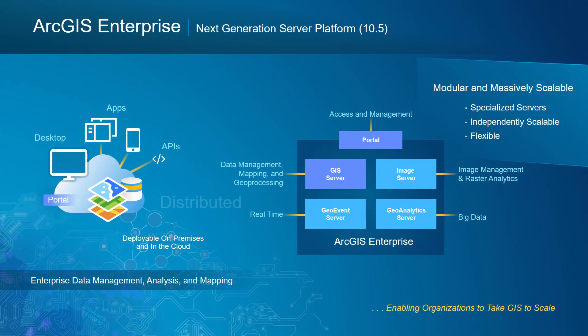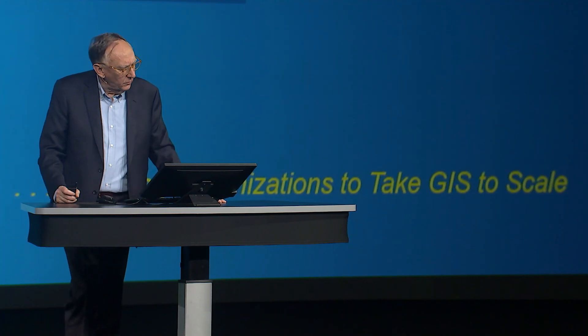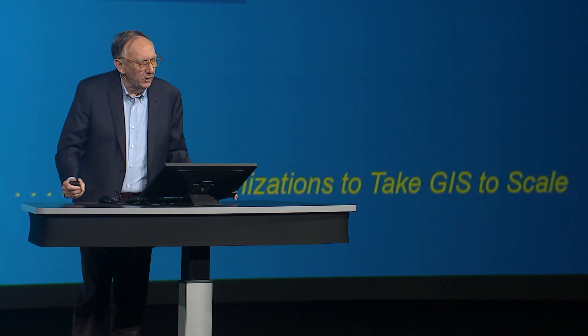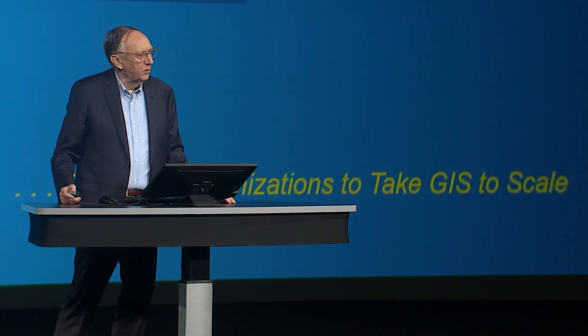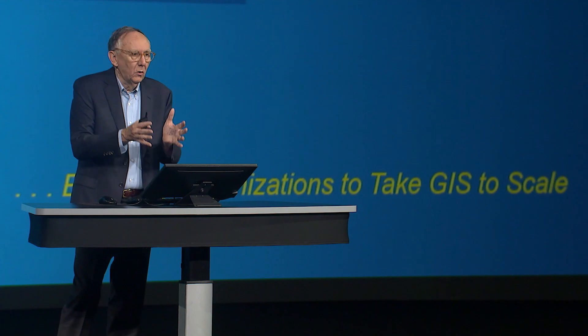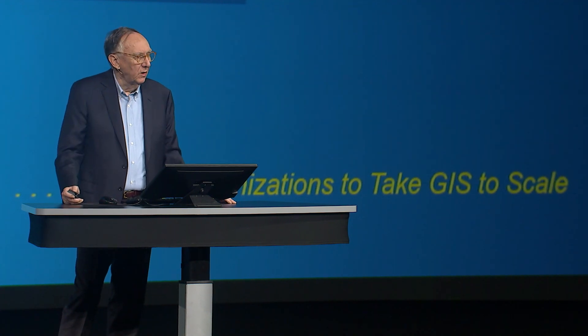Not only are the two anchors — Portal and Server — scalable to dozens of computers or dozens of cores, but also integrated with them are specialized servers like the Image Server, the GeoAnalytic Server, or the Real-Time Server. This architecture will allow us to scale out and take GIS inside and among organizations to scale.